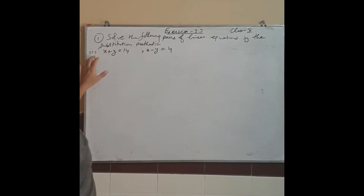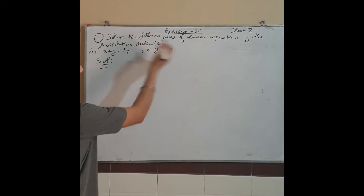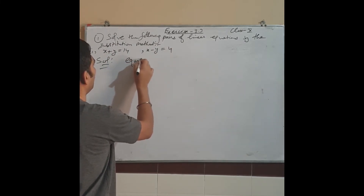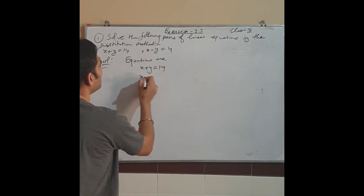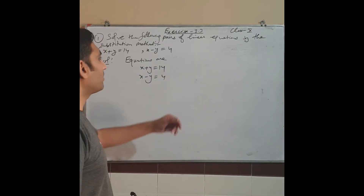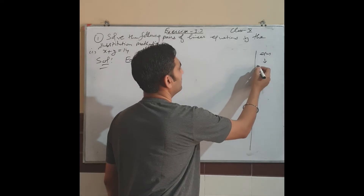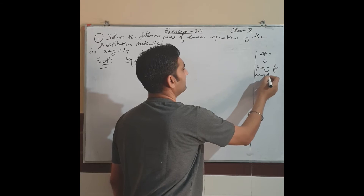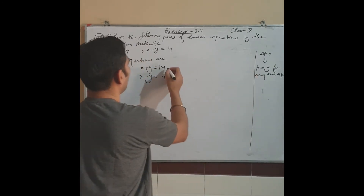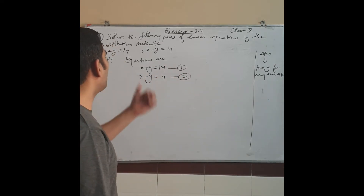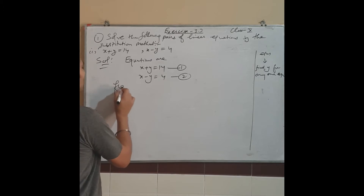Part number one: x + y = 14 and x − y = 4. Two equations are given. Give them numbers. The equations are: x + y = 14 and x − y = 4. We will find y from any one equation — that is the first step in the plan. From any one you can find y; I am going to start from equation number one, but you are free to use equation two also.